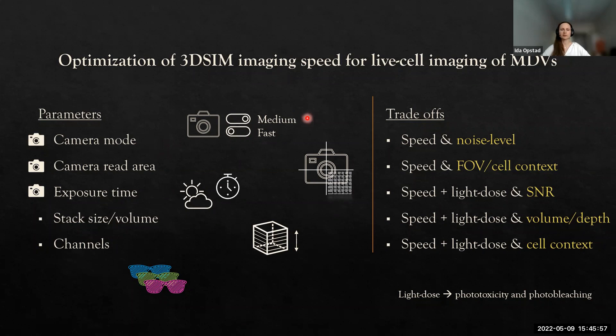Usually we image in a medium imaging speed because the noise is lower, recommended by the manufacturer, but I changed that to fast. I changed the camera read area because it takes quite a lot of time to read out all these pixels, maybe 30 milliseconds. I only used a small portion of the camera for the live cell imaging and it went a lot faster. The exposure time and illumination intensity conditions also need to be optimized to be as fast as possible, but still give a reasonable reconstruction.